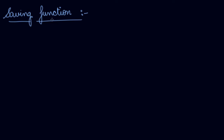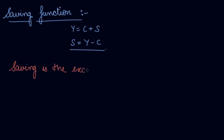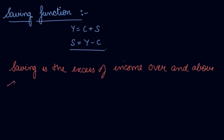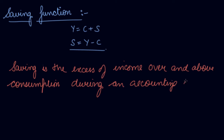If your income changes, what will be the change in your savings? We know that income is equal to consumption expenditure plus saving. So saving will be equal to income minus consumption. Saving is the excess of income over and above consumption during an accounting year — whatever you spend on consumption, what is left over is your savings. So saving is a function of income.